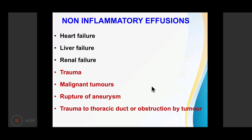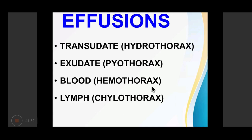Hemothorax—accumulation of blood and clot—occurs due to trauma, malignant tumour, or rupture of an aneurysm. Chylothorax occurs with trauma to the thoracic duct or its obstruction by a tumour, resulting in milky white fluid containing lymph and fat. Non-inflammatory effusions due to heart failure, liver failure, or renal failure produce watery, pale yellow fluid collecting at the base of the lung, termed hydrothorax. Empyema is accumulation of pus, grossly creamy or yellowish-green, containing leukocytes, dead cells, and necrotic material.